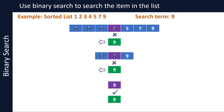Report that the item is found and exit the algorithm. If we were to search for 8, which is not in the list, then we will not find the item in the list and we'll have to report item not found, and then exit the algorithm.